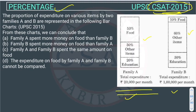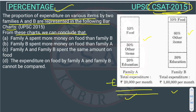But this is a very easy question, so we will discuss it. The proportion of expenditure on various items by two families A and B are represented in the following bar chart. From this chart we can conclude certain things. Family A is earning 20,000 per month, and family B is earning 1 lakh per month.